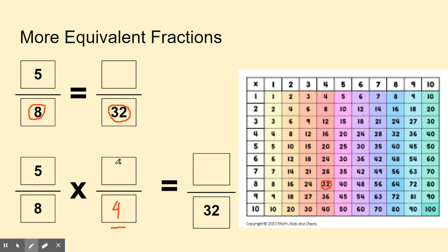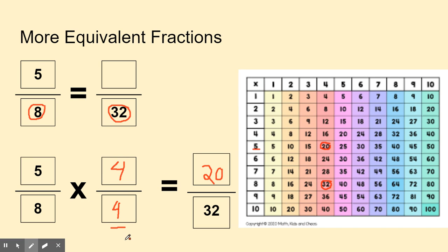Since we multiplied the denominator by 4 to get to 32, we're also going to multiply the numerator by 4. Five times 4 is equal to 20. We multiplied by 4 because we have to multiply the numerator by the same as the denominator. So five-eighths is equivalent to 20 over 32.